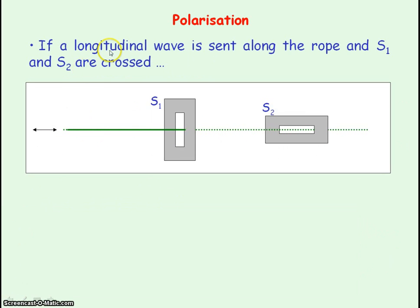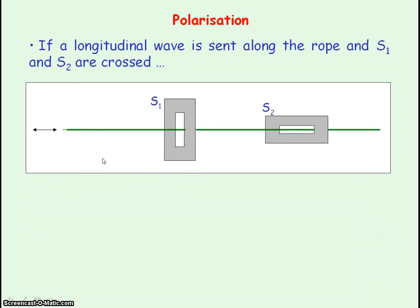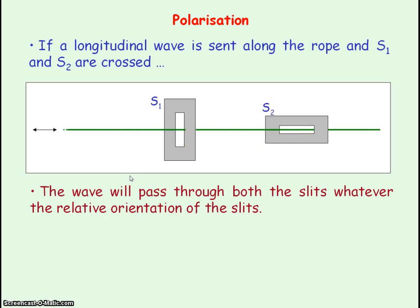Now, if we were to send a longitudinal wave along the rope — remember, a longitudinal wave is when the direction of the oscillations is the same direction in which the wave is travelling — what would happen at S1 and S2 if the slits are crossed? The wave will pass straight through the slits. Whether S2 is parallel to S1 or whether they're crossed, the longitudinal wave will always pass through, unlike a transverse wave.